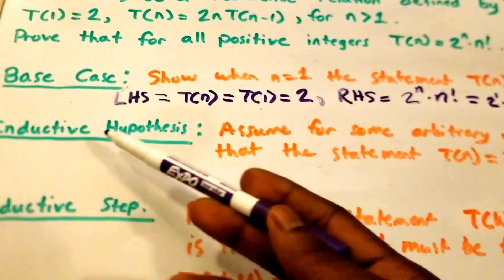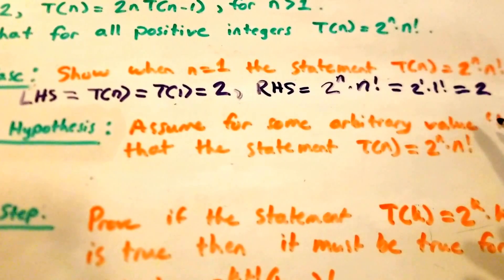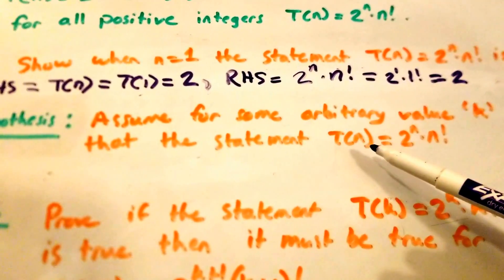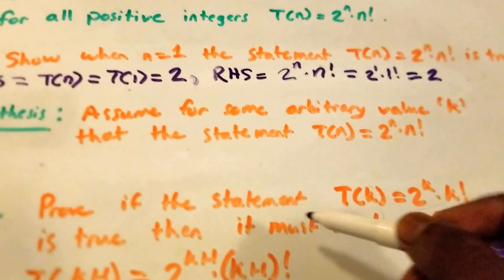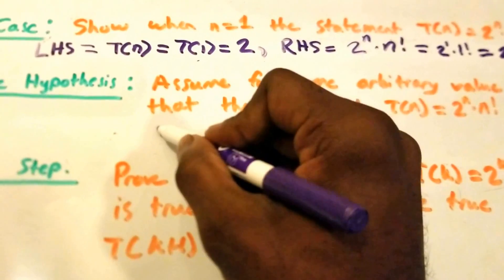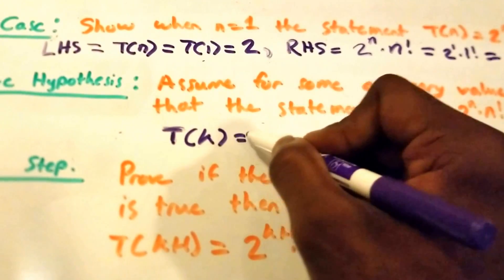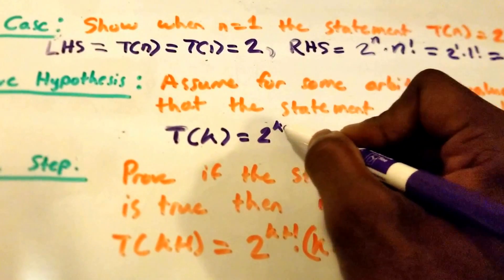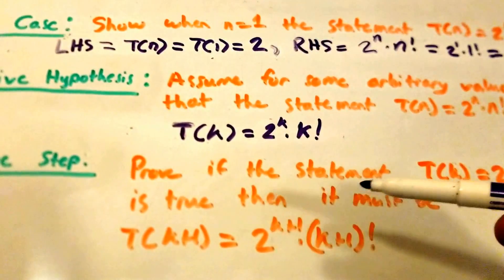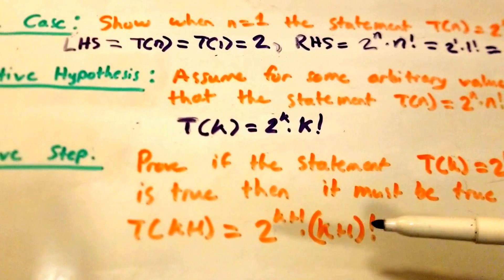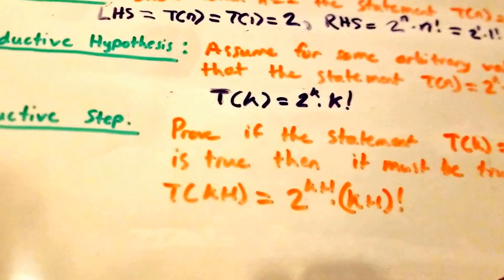Next, we do our inductive hypothesis. We assume for some arbitrary value k that the statement T of n equals 2 to the power of n times n factorial holds. That means we assume T of k equals 2 to the power of k times k factorial — we are simply substituting k for n.